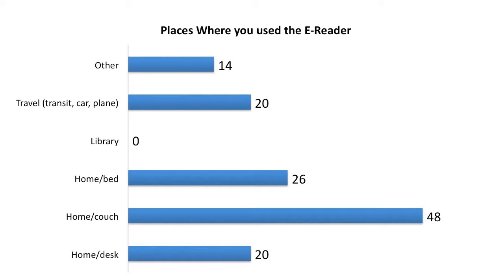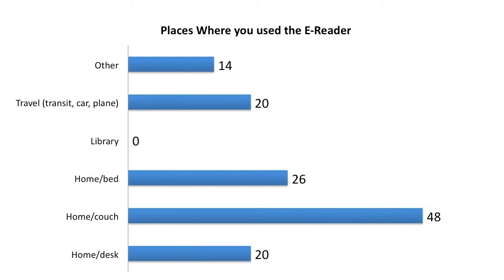We also looked at where participants used the e-reader. 20% used it while travelling — on a plane, in a car, or on a bus. 26% used it at home in bed, showing the portability advantage. 48% used it on their home couch, and 20% used it at a desk at home. People 55 and older used the technology in a variety of locations, demonstrating its flexibility.